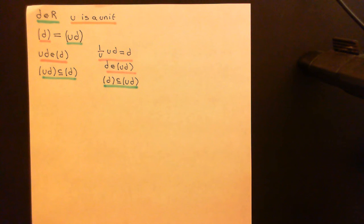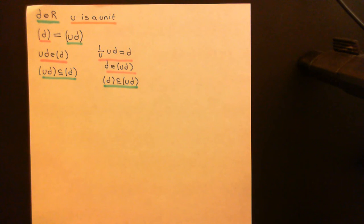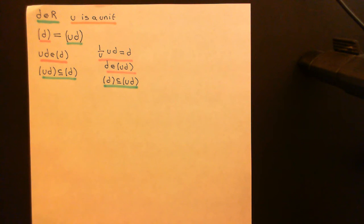So the principal ideal generated by D must be exactly the same as the principal ideal generated by U times D. In your commutative ring, if you find one greatest common divisor, you can look for others by multiplying it by units in that ring, and the elements you get will always be greatest common divisors. What I now want to show is that if we're working in an integral domain, that is the only way you can find other greatest common divisors — by doing this you will have found all of them. There won't be any more.